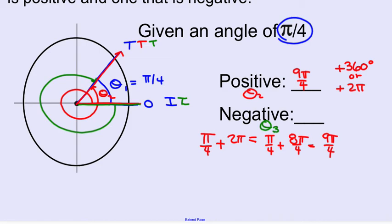What we're going to do now is subtract. We're going to go in the negative direction, minus 360 degrees, or since we're in radian measure, minus 2 pi. You take your negative 2 pi plus pi over 4. What does that angle give you?